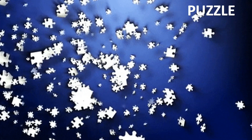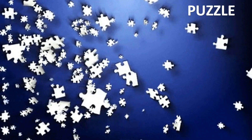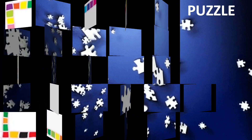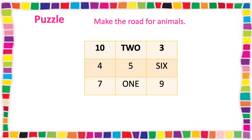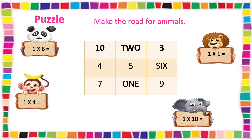It's puzzle time! Let's have a puzzle. I will assign you one puzzle. The puzzle question is: make the road for animals. This is a lion, and he is asking you 1 into 1. Next is elephant, asking you 1 into 10. Next is panda, asking you 1 into 6. And last is monkey, asking you 1 into 4 equals dash. Find the answers and draw it on a paper.